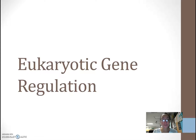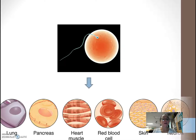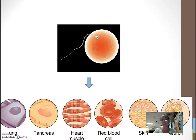In this chapter, we are looking at eukaryotic gene regulation. When we look at how we are formed — when a sperm swims into an egg and you have a fertilized cell — that one cell will actually differentiate and become, in humans, about 200 different kinds of cells.